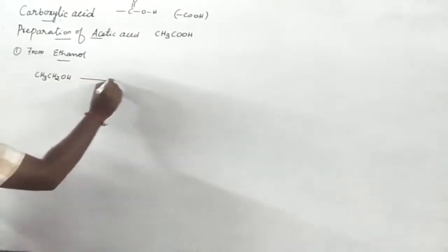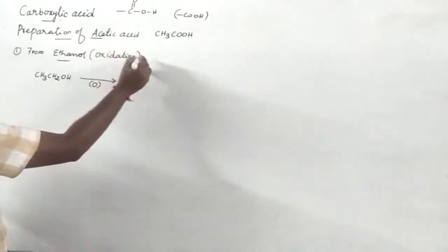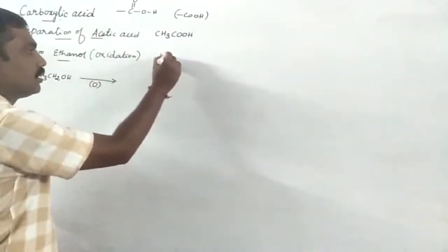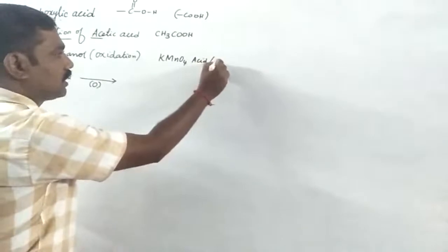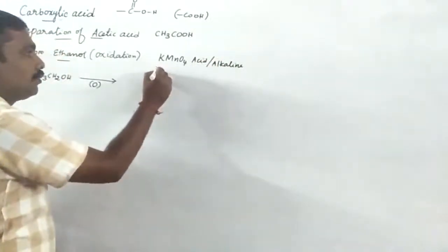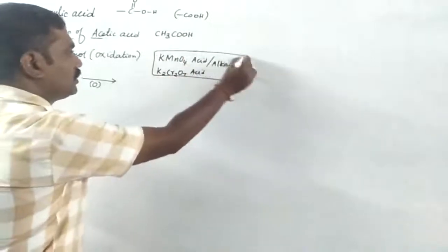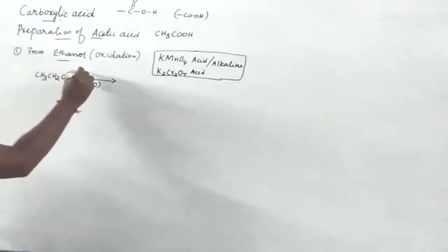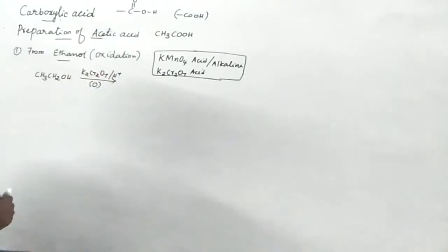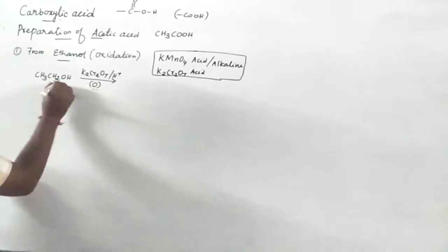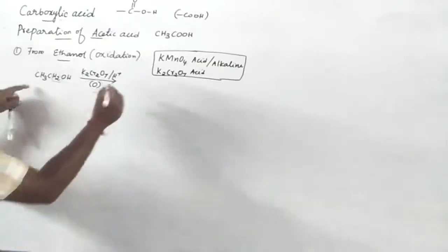Ethanol is oxidized. Now it is an oxidizing process, an oxidizing reaction. Make the chlorine in the water, place the chlorine in the water. So we will have K2Cr2O7 remaining component, CH3CH2.